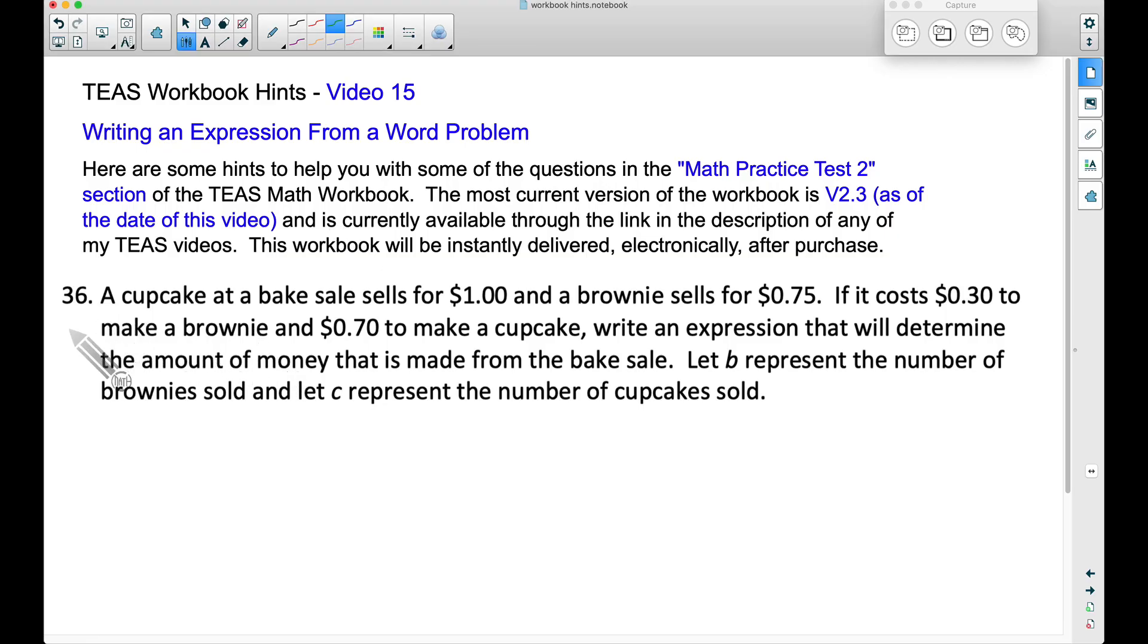This is actually number 36 from that second practice test. A cupcake at a bake sale sells for $1 and a brownie sells for $0.75. If it costs $0.30 to make a brownie and $0.70 to make a cupcake, write an expression that will determine the amount of money that is made from the bake sale. Let B represent the number of brownies sold and let C represent the number of cupcakes sold.